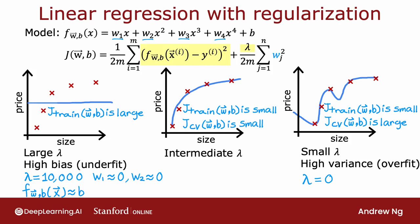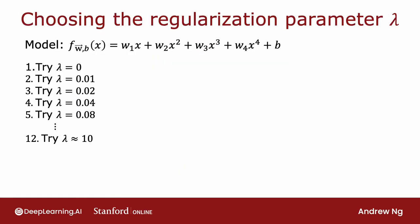If you're trying to decide what is a good value of lambda for the regularization parameter, cross-validation gives you a way to do so. The problem is: if you're fitting a fourth-order polynomial with regularization, how do you choose a good value of lambda? This procedure is similar to choosing the degree of polynomial D using cross-validation. Specifically, try lambda equals zero, minimize the cost function, and end up with parameters w1, b1. Then compute the cross-validation error jcv of w1, b1.